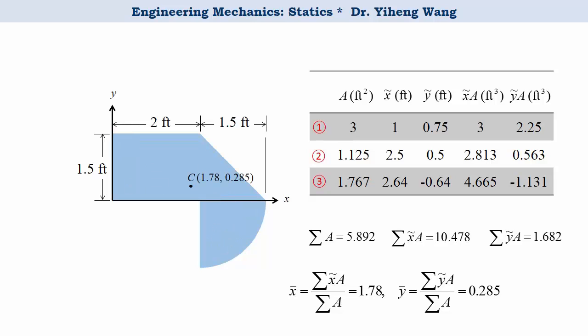And here it is, the centroid of the composite area. Note that you can set up the x-y coordinate system differently. As a result, the centroid will have different values for coordinates, but they should always correspond to the same point in relation with the area.